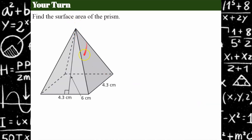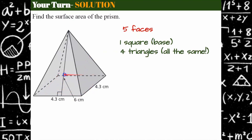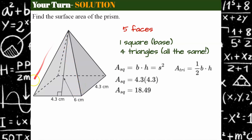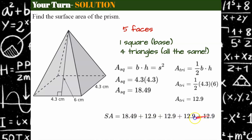Now find the surface area of this pyramid. Pause and come back when you're ready. Welcome back. There are five faces: one square base of 4.3 by 4.3 and four triangular faces, one on each side that comes to a point. The square base area is 4.3 times 4.3 = 18.49. Each triangular face: one half base times height, with base 4.3 and perpendicular height 6, gives an area of 12.9. So the surface area is 18.49 + (4 × 12.9) = 70.09 square centimeters.